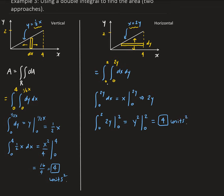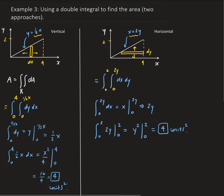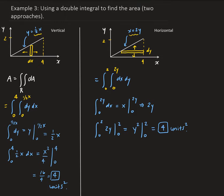That's how you do this problem — two ways. I showed the vertical approach and then the horizontal. Just keep in mind: if your representative piece is vertical, it's going to be dx, and that needs to be on the outside of the integral. If it's a horizontal piece, you're using dy, so that has to be on the outside.